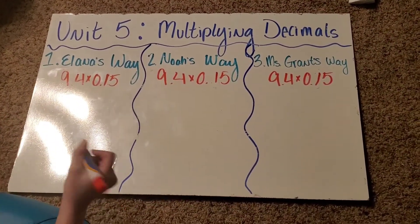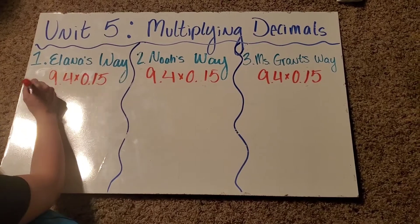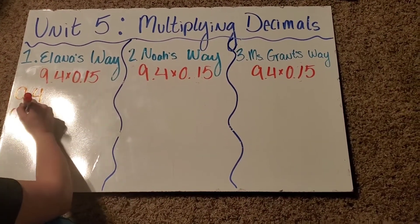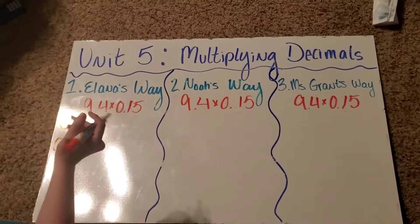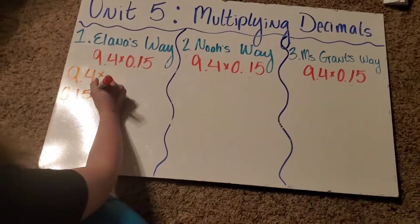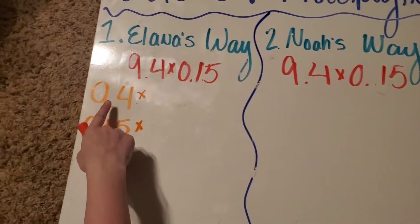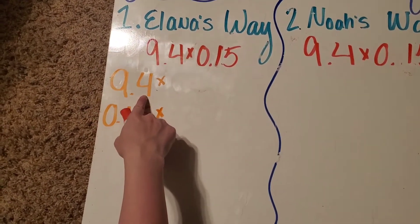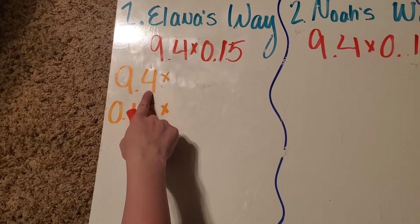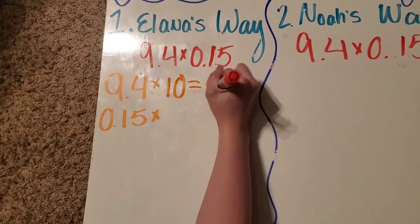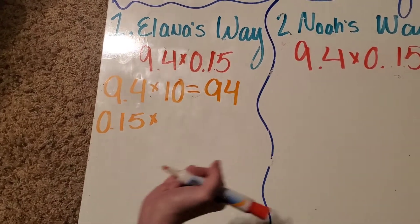Starting with Elena's, she is the one that turned the decimals into whole numbers. So remember, she multiplied it. So this is 9 and 4 tenths. Since it's a tenth, we multiply it by 10, and this is going to become the whole number 94.